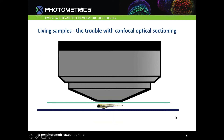Confocal microscopy overcomes one weakness of widefield microscopy by using pinholes to selectively collect light only from the plane of interest, which eliminates out-of-focus fluorescence. But high intensity light still penetrates through the entire sample, which still causes photobleaching and photodamage.